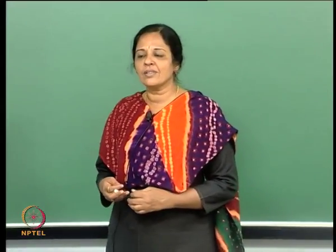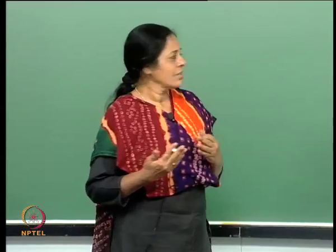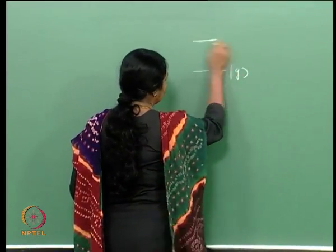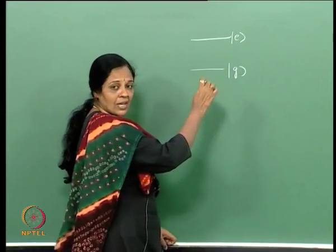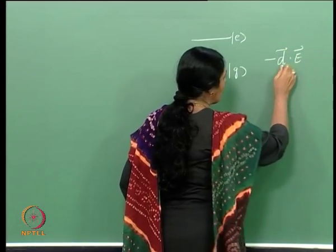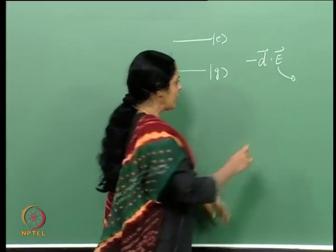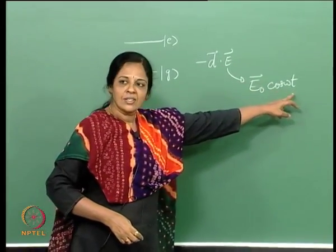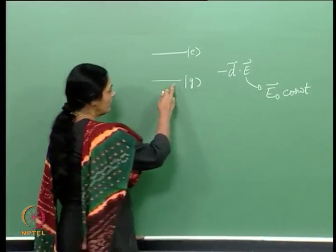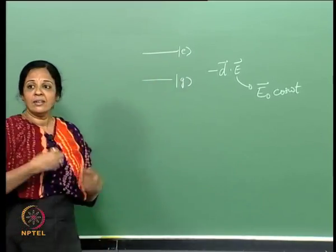In the last lecture, we looked at the interactions of the radiation field with atoms. In particular, we looked at the Rabi model. It is a semi-classical model in the sense that you have a 2-level atom — a ground state and an excited state — and the interaction between this atom and the radiation field is through the dipole operator D. The field was time dependent, varying sinusoidally, and the population moved from the lower level to the upper level and back again in a sinusoidal fashion.